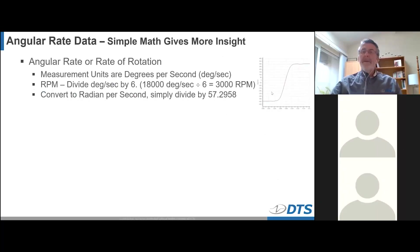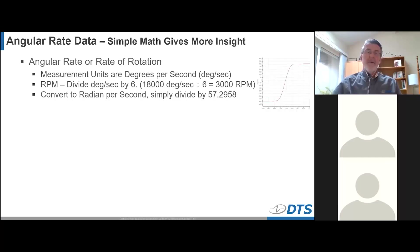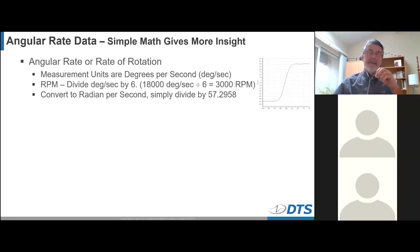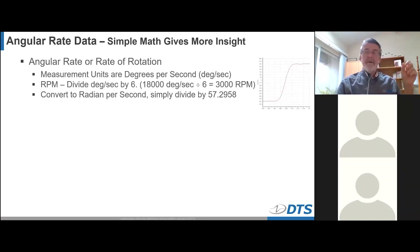An angular rate sensor actually measures the rate of rotation — not the angle itself, but the rate of turning. The standard units are degrees per second: how many degrees of rotation occur per second. This can also be thought of as RPM. If you take an angular rate sensor and divide the output by six, it's a direct conversion to RPM. For example, an 18,000 degrees-per-second ARS divided by six can measure up to 3,000 RPM — this is sometimes missed by users. You can also convert to radians per second by dividing by the appropriate conversion factor.